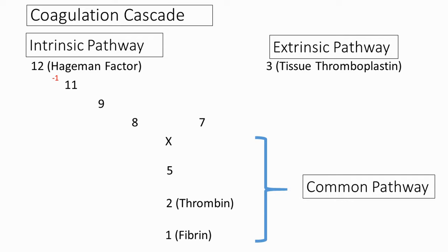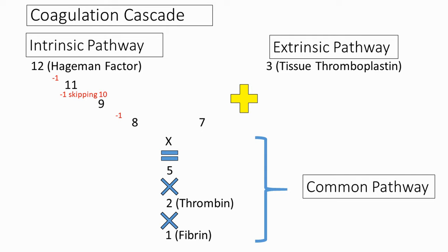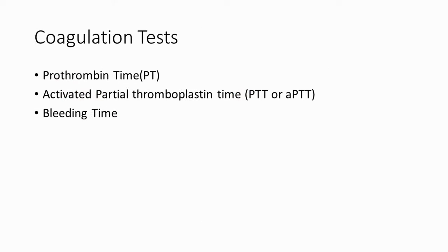For the intrinsic pathway, start with factor 12 and keep subtracting 1: 12 → 11 → skip 10 (common pathway) → 9 → 8. For the common pathway, the factors are 10, 5, 2, and 1 — starting from the bottom, multiply 1 × 2 × 5 to get 10. For the extrinsic pathway, it's simply factors 3 and 7 — think of adding them to reach 10 — then it follows the same common pathway.